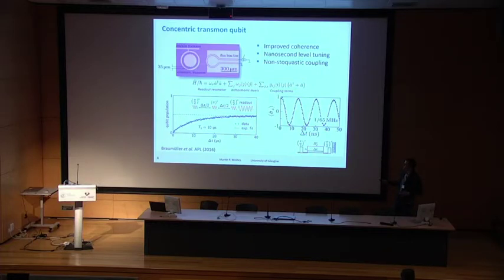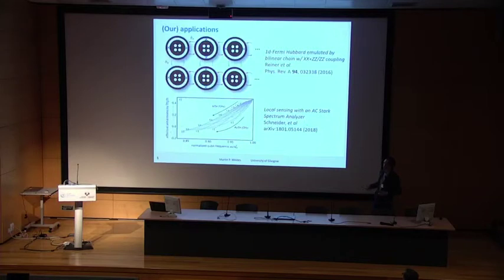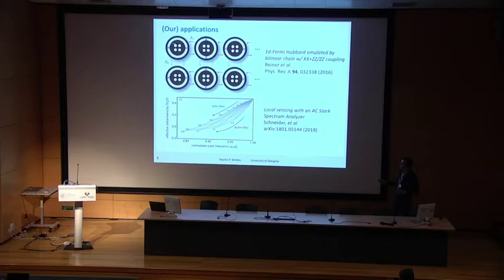There's a particular feature of the concentric transmon: it has an inductive shunt. If the concentric transmon is biased off the sweet spot, this inductive shunt causes a persistent DC supercurrent in the system. This supercurrent carries a magnetic flux, and therefore a magnetic dipole moment is associated with the transmon when biased off the sweet spot.